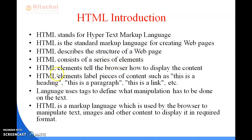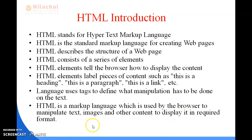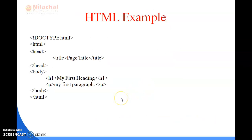HTML elements tell the browser how to display the content in a web page. HTML elements label pieces of content such as: this is a heading, this is a paragraph, this is a link, etc. The language uses tags to define what manipulation has to be done on the text. HTML is a markup language used by the browser to manipulate text, images, and other content to display it in the required format.